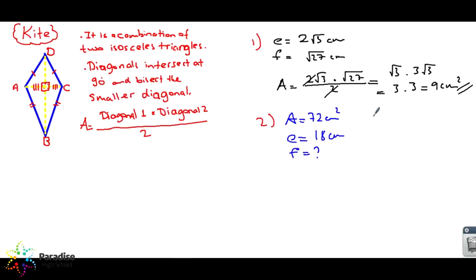We know that area is equal to E times F divided by 2. E and F are the diagonals of the kite, so the product of the diagonals divided by 2 gives us the area. So 72 is equal to 18 times F divided by 2.